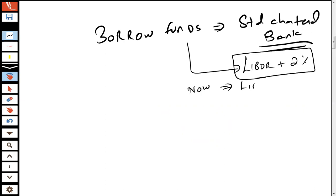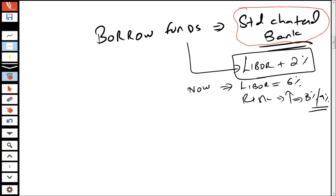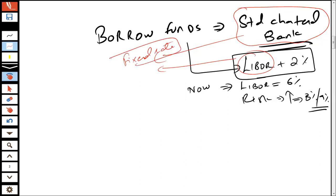As of now, the LIBOR prevalent in the market is, let's say, 6%, and you are facing a risk that LIBOR may actually go up — might go up to 8%, might go up to 9%, et cetera. So you're facing a risk with respect to this LIBOR. You tell Standard Chartered Bank that you need to hedge yourself and you can't commit to a borrowing where LIBOR is not fixed. You would be grateful if they could convert this loan into a fixed rate loan — say 8% or 9% — so you know in advance what your cost is going to be.